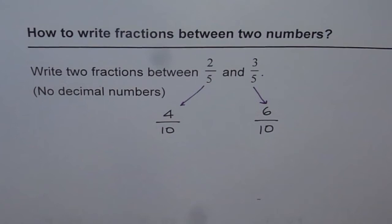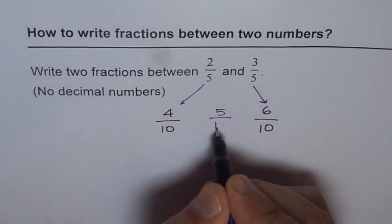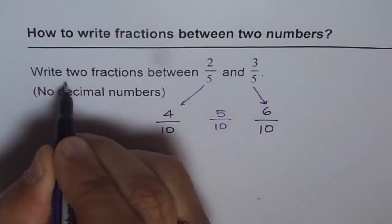But when you do times 2, you get 4 and 6 in the numerator. I could write only one number in between. That is 5 over 10. So 5 over 10 is one number. But I need two fractions.